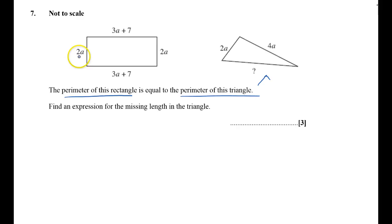So the perimeter of a rectangle, I've got 2a, 3a, that's 5a, 7a, 10a, add 14. That's the perimeter of my rectangle.